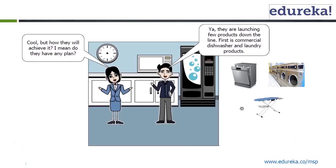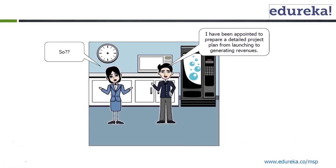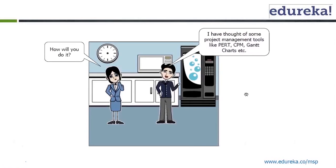He says, I have been appointed to prepare a detailed project plan from launching to generating revenues. So yes, I am the one who is going to launch these products and basically I am the one who will be responsible for generating revenues. So how will you do it? She says, I have thought of some project management tools like PERT, CPM, Gantt chart, etc.